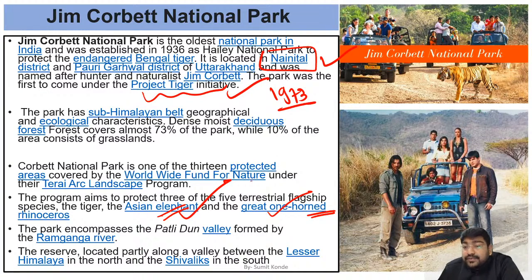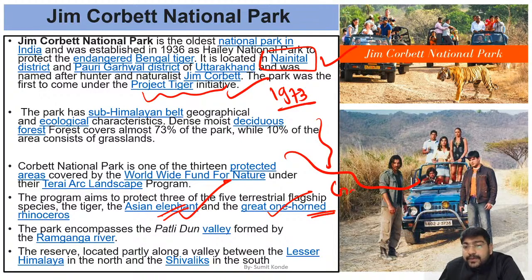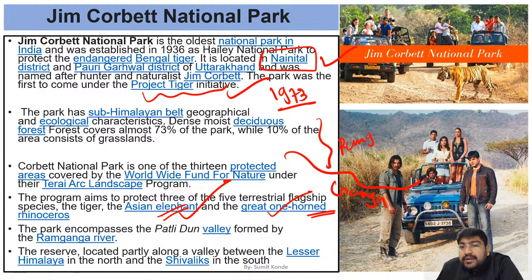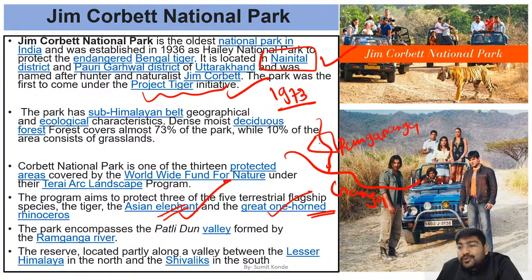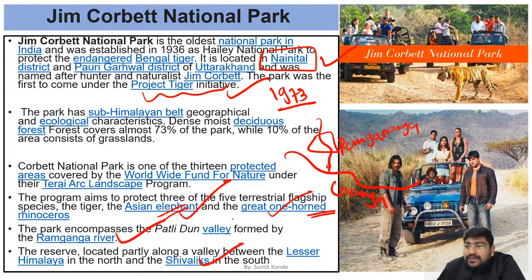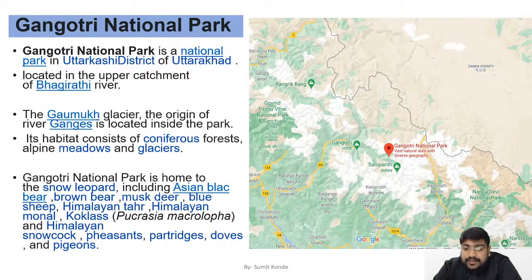The Ram Ganga river flows through Jim Corbett National Park. Ram Ganga is a tributary of the Ganga. It flows from the upper direction and passes through the middle of Jim Corbett. The region also has some tarai type terrain in the Shivalik part.